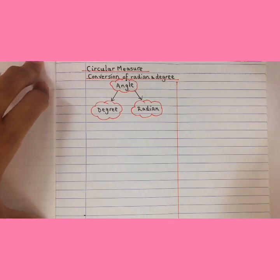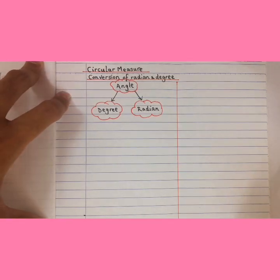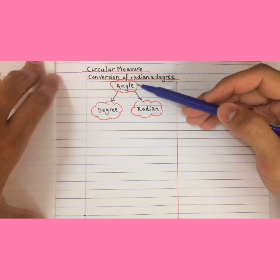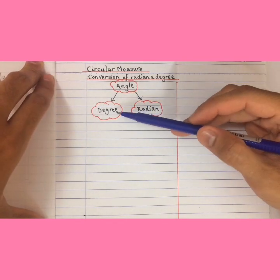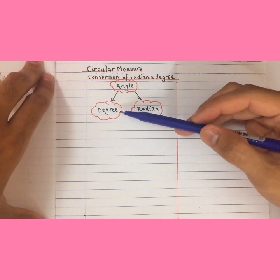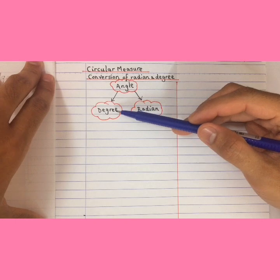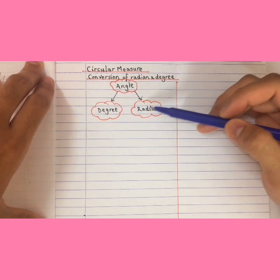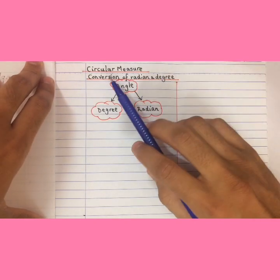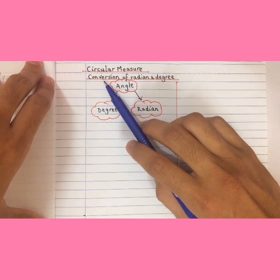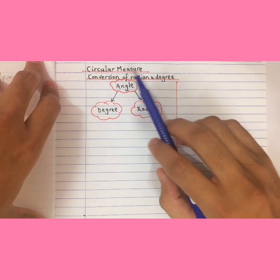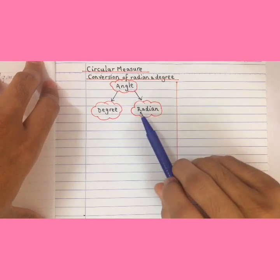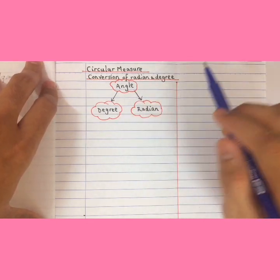Assalamualaikum and hi everyone. Today's lesson is about circular measure. Angles can be represented using two ways. You can either represent an angle using degrees, which is what we always do, and then there's another way, which is using radian. For the first subtopic, we're going to learn how to convert from radian to degree and degree to radian.